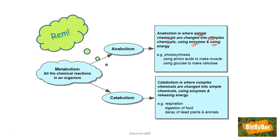Examples of anabolic reactions include photosynthesis — because we are taking simple chemicals, the ingredients carbon dioxide and water, and changing them into a complicated chemical called glucose, using enzymes and using the energy of the sun. Another example is taking amino acids, simple sub-units of protein, to make muscle protein — you might have heard of anabolic steroids taken to build muscle. Another anabolic reaction is taking simple units of glucose to make the more complicated polysaccharide called cellulose.